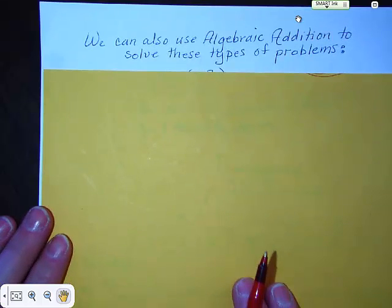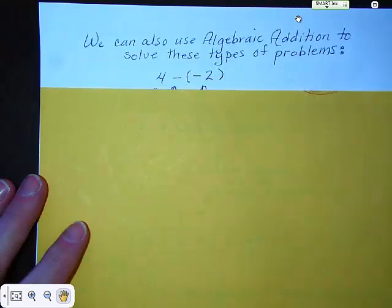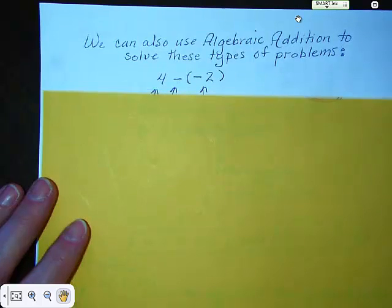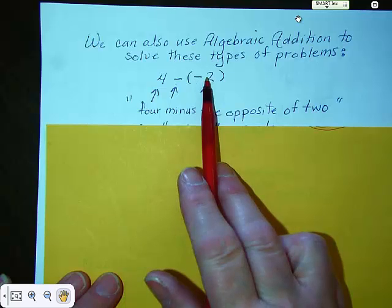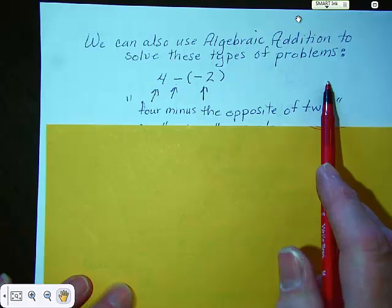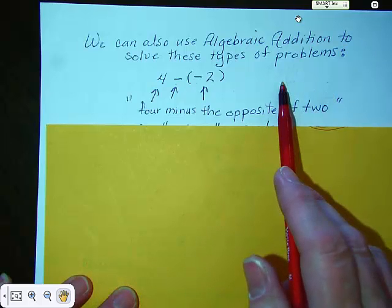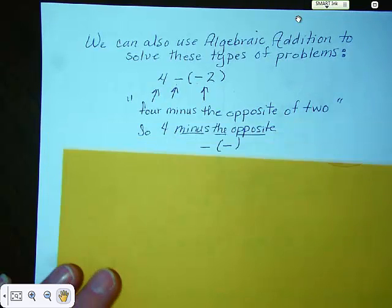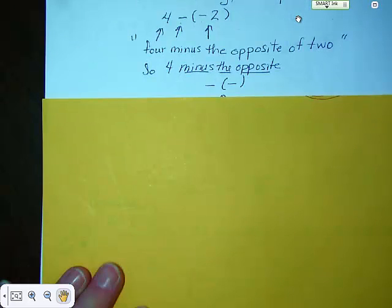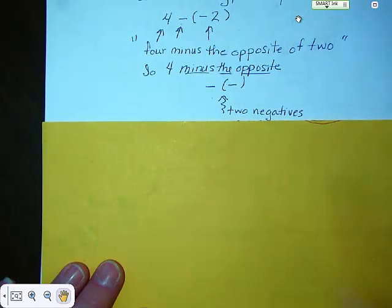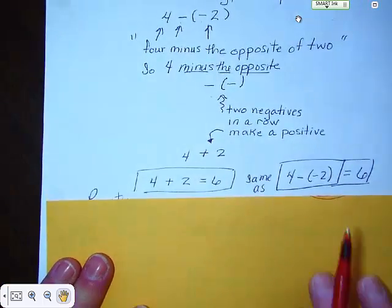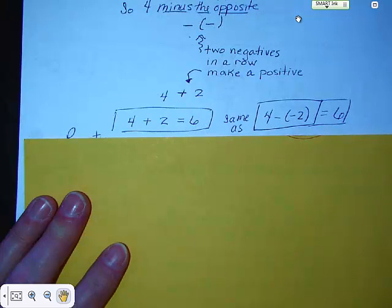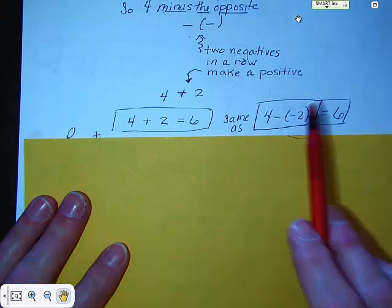We are sometimes put in positions where we have to solve problems using algebraic addition. Here's an interesting one: 4 minus the opposite of 2. We talked about that earlier — two negatives make a positive. So 4 minus the opposite of the opposite of 2: two negatives in a row make a positive, and that ends up being 4 plus 2. So 4 plus 2 equals 6, which is the same thing as 4 minus the opposite of 2. They both equal 6.